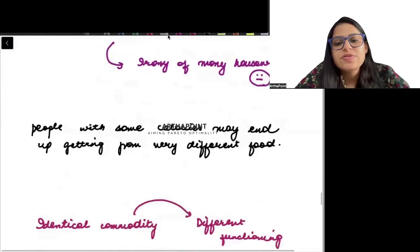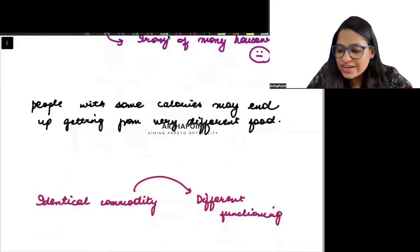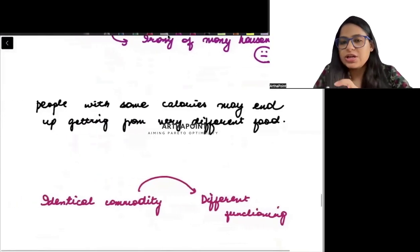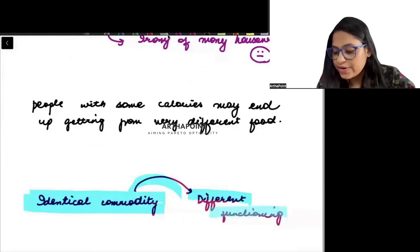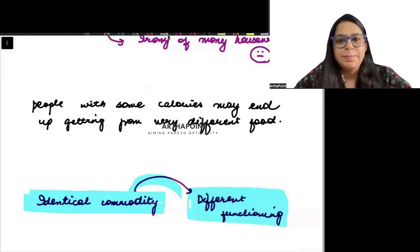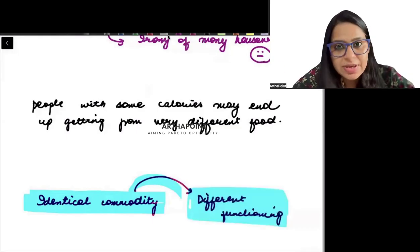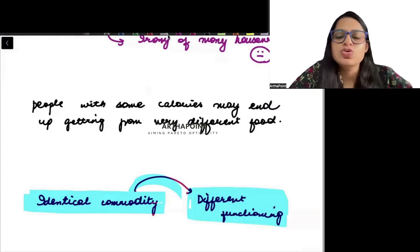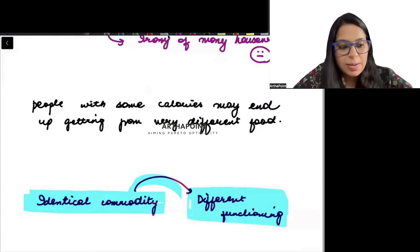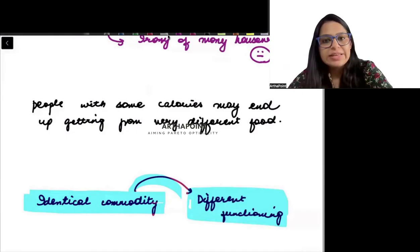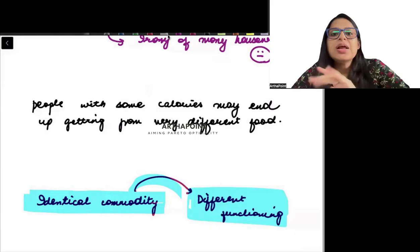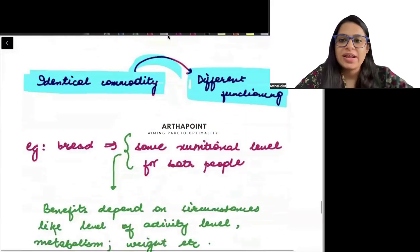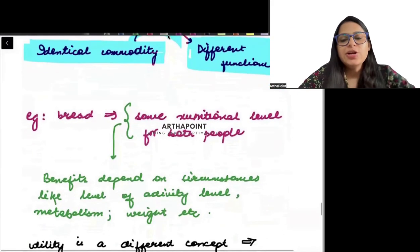So these are some of the examples given by Amartya Sen. So ultimately, we come to an important conclusion here, and the conclusion is that identical commodity can lead to different functionings. Commodity is the same, money is the same, clothes are the same. But one person will be happy and the other will not be the same. The food is the same, but one body will absorb the same and the other will not be the same. So we are talking about identical commodities, but the same commodity can have different functioning.